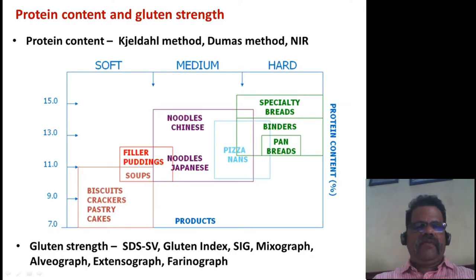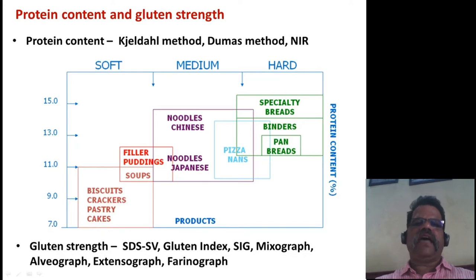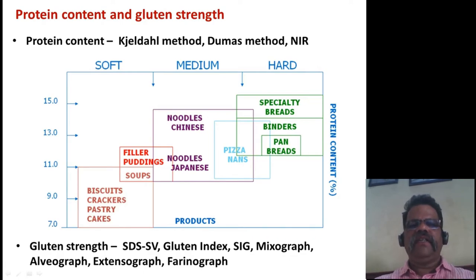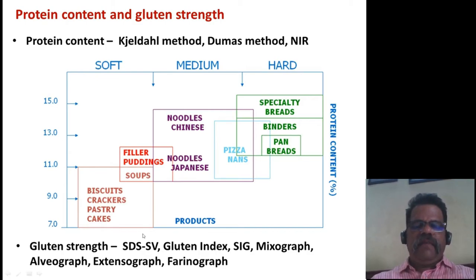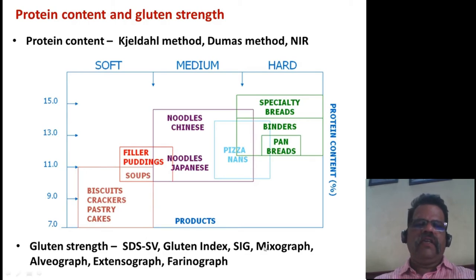Wheat grain is classified based on its physical nature as hard wheat, soft wheat, or medium hard or soft wheat. Classification is also based on protein content. If higher protein content is present, that hard wheat is good for specialty breads or white pan bread. If the wheat grain contains less protein — around 7 to 9% — and grains are physically soft, then those wheats are used for biscuits, crackers, and flatbreads. Gluten strength can be measured using chemical tests such as SDS sedimentation volume and swelling index of glutenin, and also rheological instruments such as mixograph, alveograph, extensograph, and farinograph.